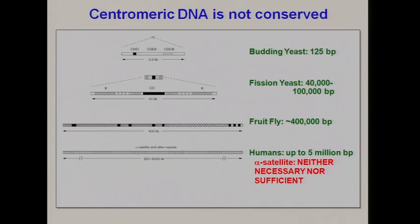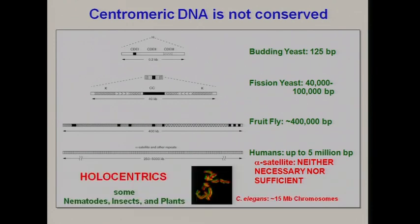These repeats cause a lot of problems in studying human centromeres because repetitive DNA is very difficult to get a handle on. C. elegans, along with some other insects and plants, have a different strategy — they're called holocentrics, which means they don't have a point centromere. The centromere is essentially the entire chromosome. In worms, this allows us to study centromere function because we can get around all these repeats.